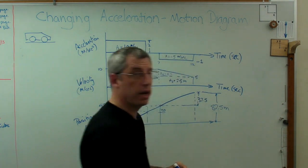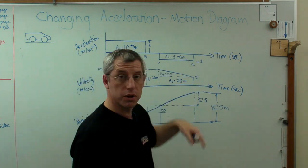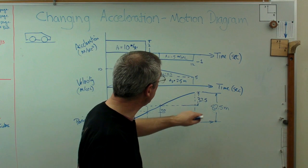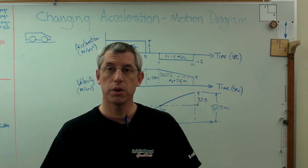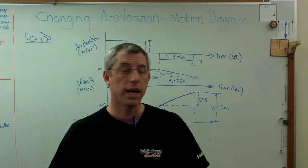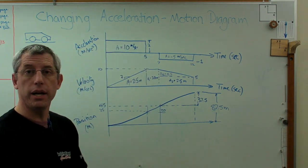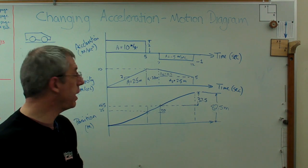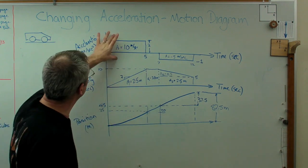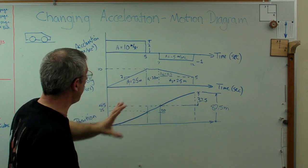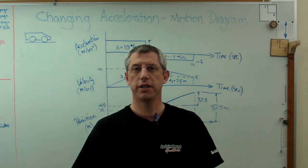So from this motion diagram, the final velocity is 5 meters per second — the cart is still moving at the end of the run — and the final position is 82.5 meters. This is called a motion diagram, and mathematically it's identical to a load-shear-moment diagram: acceleration corresponds to load, velocity to shear, and position to moment. Hope this helps, and I'll talk to you next time.